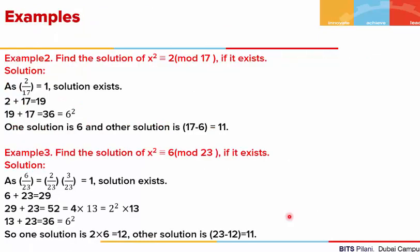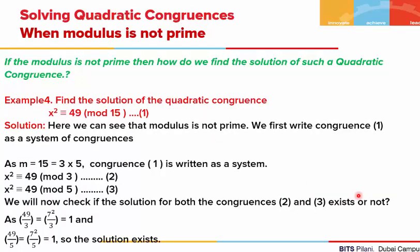In these questions our modulus was prime. What do we do when the modulus is not prime? In such a case, we first write the given congruence as a system of congruences. For example: find the solution of X squared is congruent to 49 mod 15. Since 15 is not prime, we factorize it: 15 equals 3 times 5. So we write the congruence as X squared ≡ 49 mod 3 and X squared ≡ 49 mod 5.